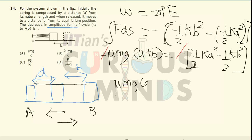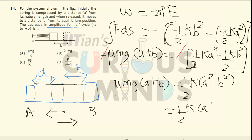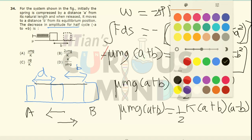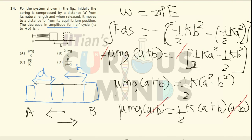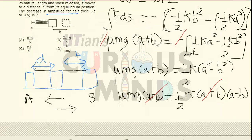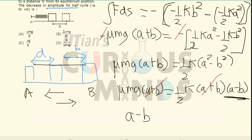Taking half k common: half k·(a² - b²) equals μmg·(a + b). Since a² - b² = (a + b)(a - b), we get half k·(a + b)(a - b) = μmg·(a + b). The (a + b) cancels from both sides. Therefore, the decrease in amplitude (a - b) equals 2μmg divided by k. This is option B.